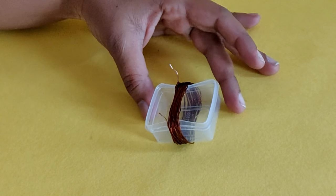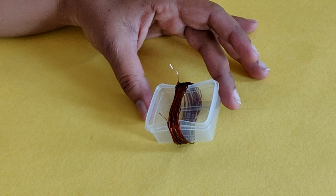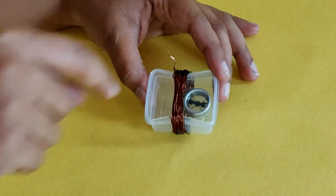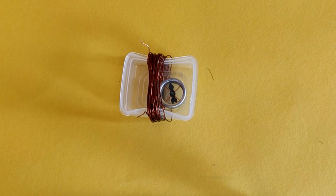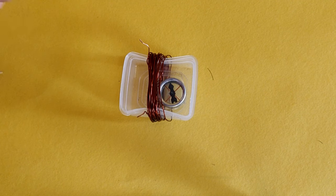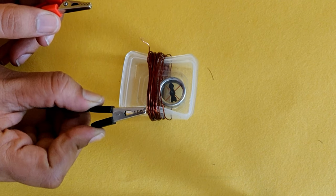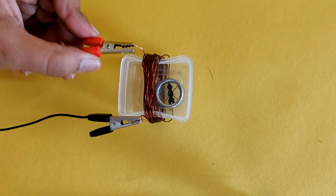Place the compass inside the box very close to the coil of wire. Connect the crocodile clips to the lead wires and turn on the switch on the battery cell holder.